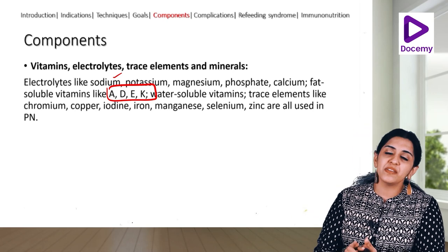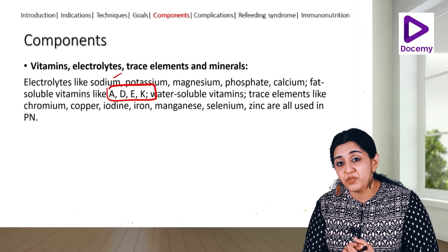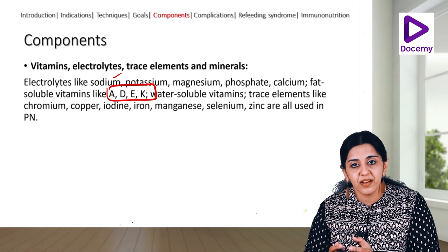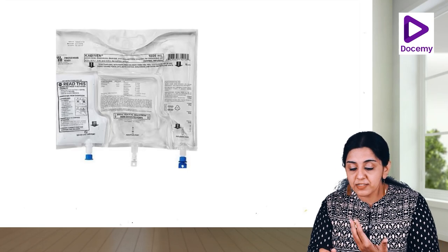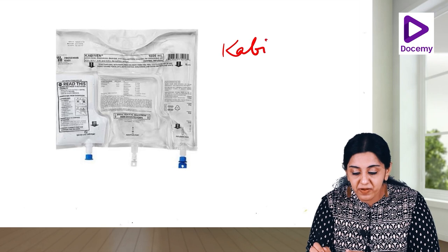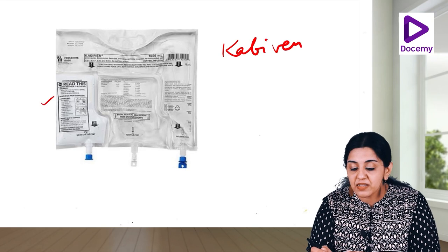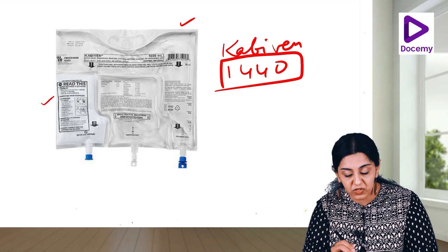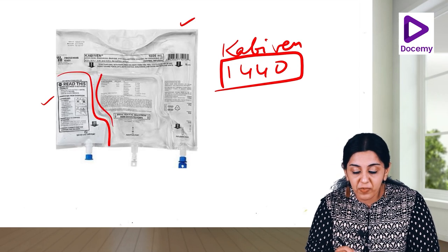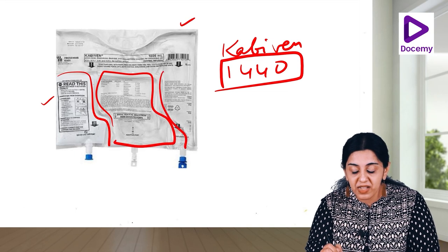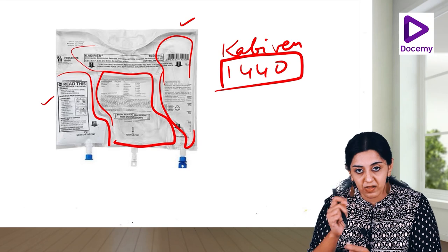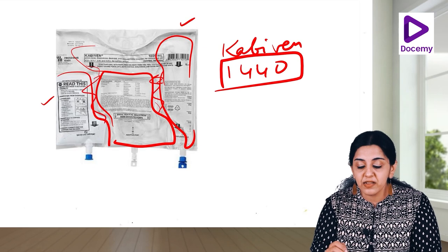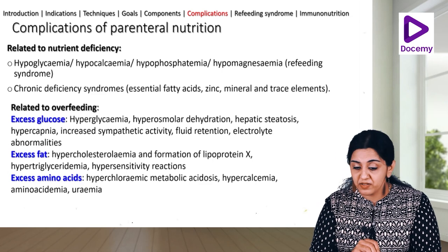Other than carbohydrates, fats, and proteins, TPN also includes vitamins, electrolytes, trace elements, and minerals. Important ones are sodium, potassium, magnesium, phosphate, calcium, fat-soluble vitamins (A, D, E, K), water-soluble vitamins, and trace elements like chromium, copper, iodine, iron, manganese, selenium, and zinc. A preparation like Kabiven contains all these ingredients in separate compartments - carbohydrates, lipids, amino acids, vitamins, and minerals - mixed together just before infusion, providing about 1440 kcal per bag.